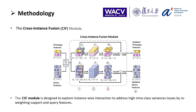Formally, we first concatenate each prototype feature with its top-k query feature with the highest cosine similarity. Then we employ two one-by-one convolution layers to learn the cross-instance interactions and output updated prototype features. Similarly, we could also easily update the query feature by the CIF module.